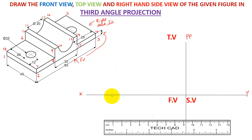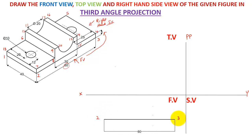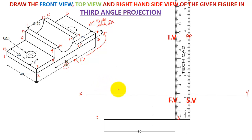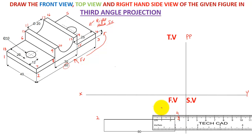Let's start the solution. Take a scale for the front view — this is 80 mm from the front side. Make a line 2-3, so this is a 2-3 line which is 80 mm from the front view. Now the 3-4 line is 5 mm in dimension, so take a scale and make a 5 mm line. This is the 4 point — complete it like this.